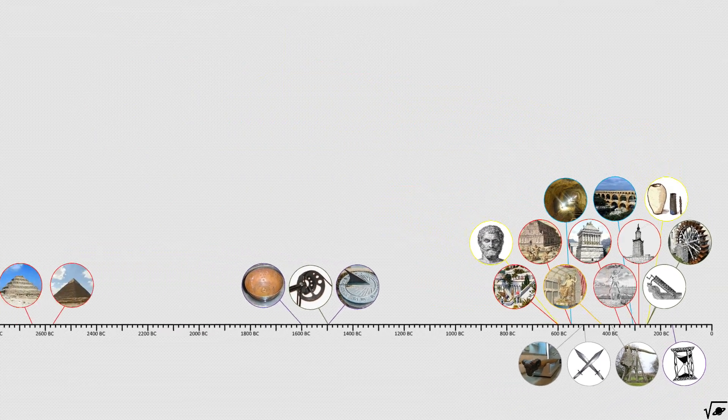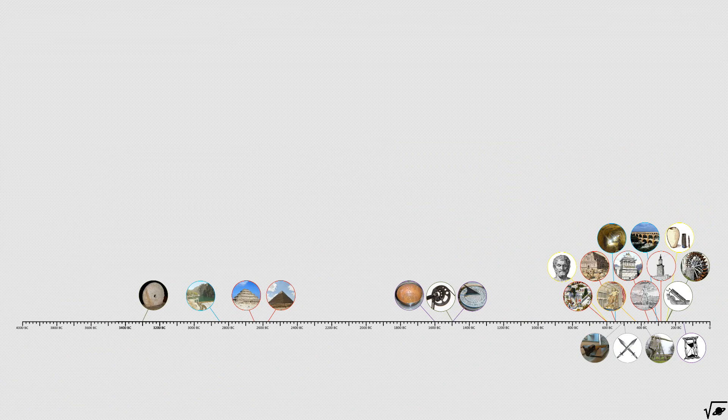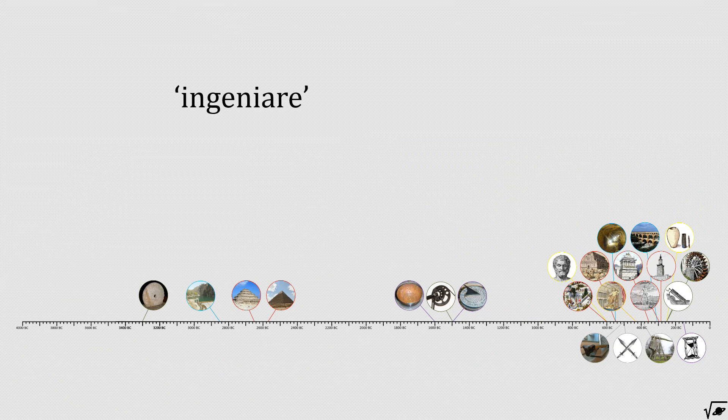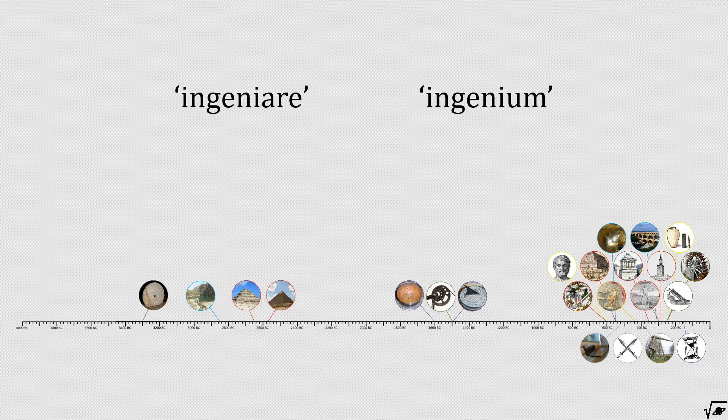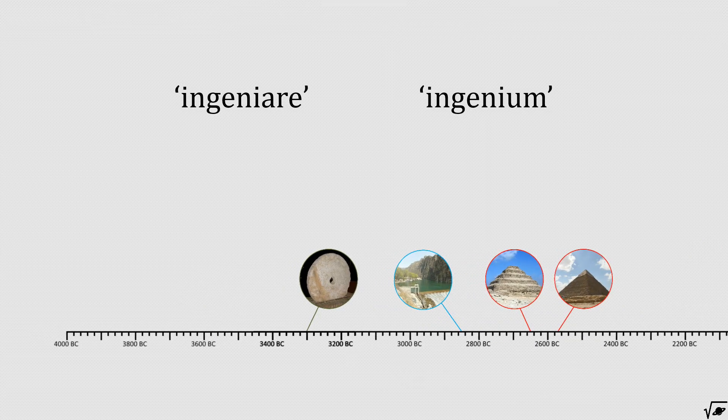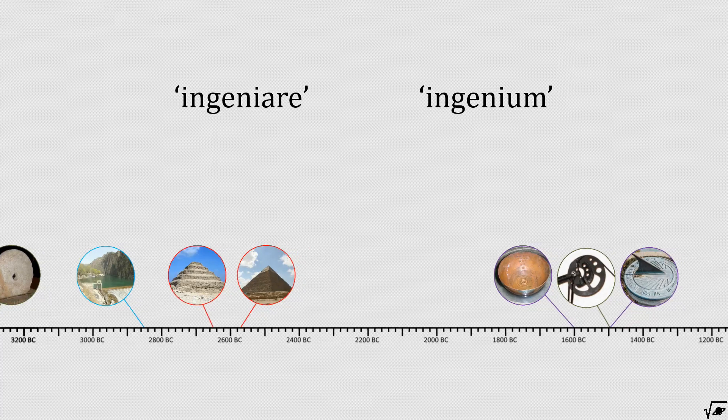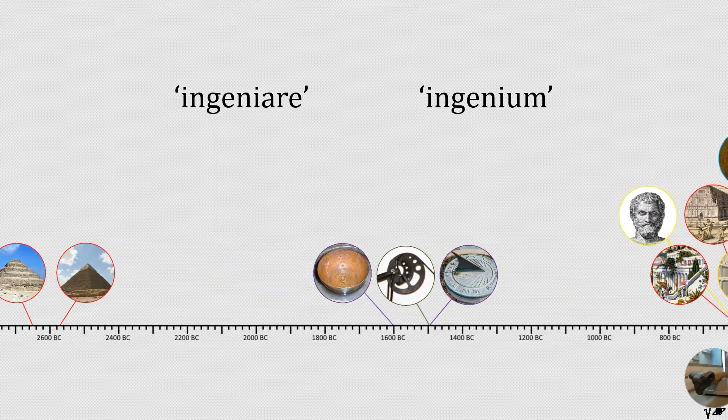All these people and all these nations were the very first engineers, since the modern word engineer is derived from the Latin words ingeniare and ingenium, meaning to devise and cleverness. These creations and inventions were made more than 2000 years ago, but definitely contributed to the world we live in now.